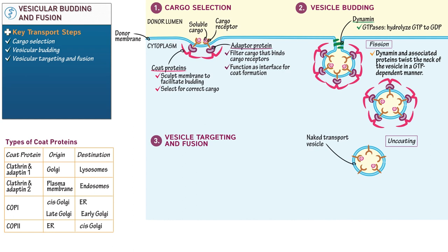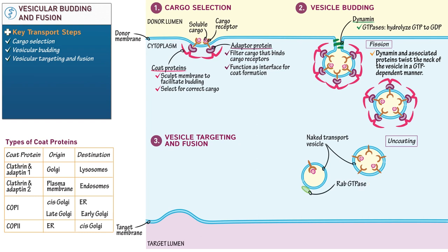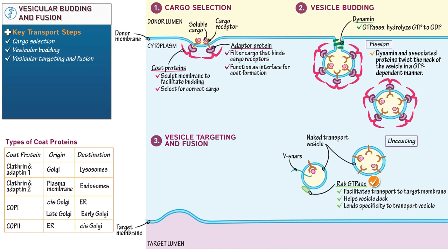First, our vesicle must recognize its target. Draw a target membrane bending outward and label the target lumen. Now in the cytoplasm, draw a simplified naked vesicle with cargo. Include the following proteins in the vesicular membrane: Rab-GTPase, which also hydrolyzes GTP like the dynamin family, and V-snare protein — the V stands for vesicle — which will bind a complementary T-snare on the target membrane. Write that the Rab-GTPase facilitates the transport of the vesicle to its appropriate target membrane by associating with cytoskeletal motors. It also helps the vesicle dock at the correct target membrane, lending specificity to the transport vesicle. Different Rab-GTPases correspond to different target membranes, and Rab-GTPase participates in the fusion of the vesicular and target membranes. We'll illustrate the function of V-snare protein shortly.